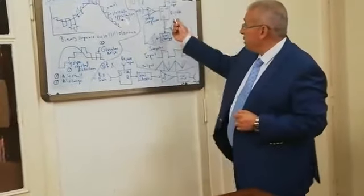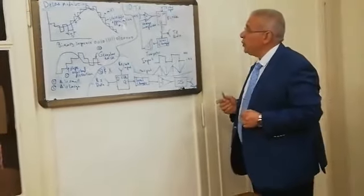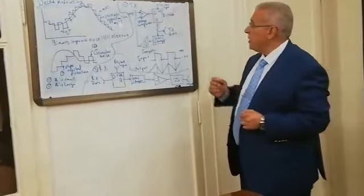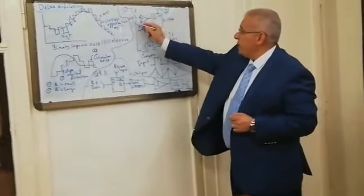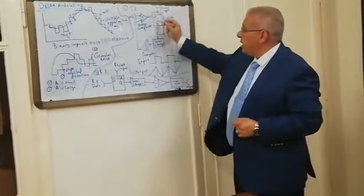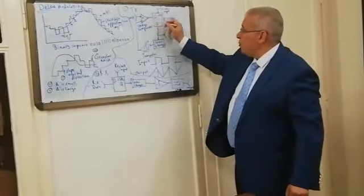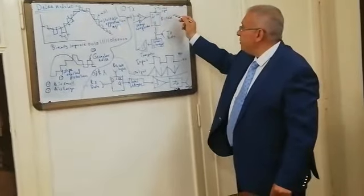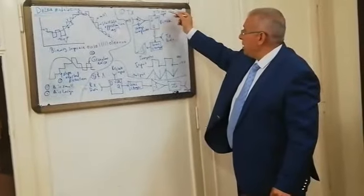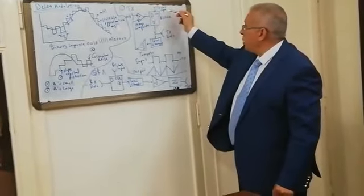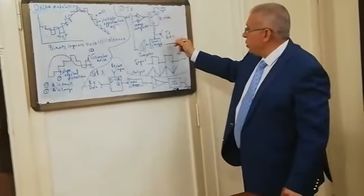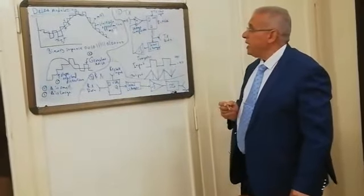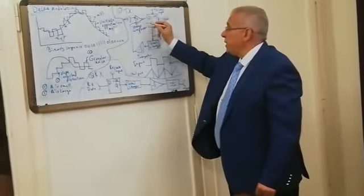Now I will demonstrate the block diagram of the transmitter of Delta modulation. Here we have the input signal M, a voltage comparator, then a D-bistable device clocked by a clock input, then a level changer, an integrator, and a feedback path through the inverting input of the comparator.